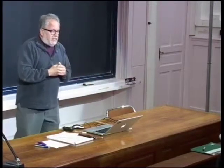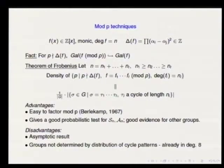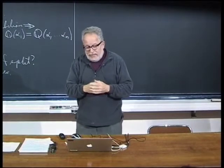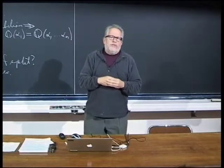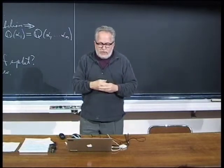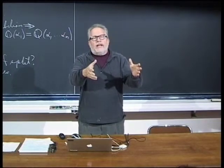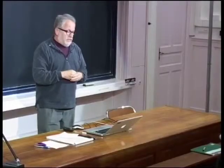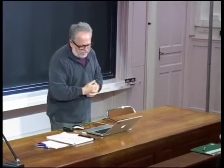Start calculating Galois groups by factoring for a few hundred primes — you'll get a sense of what group you possibly have, or at least exclude other groups. The disadvantage is it's an asymptotic result; estimates for when a prime witnesses a cycle type aren't good enough for a fast algorithm. Also, groups are not determined by the distribution of their cycle patterns — this already happens in degree eight.